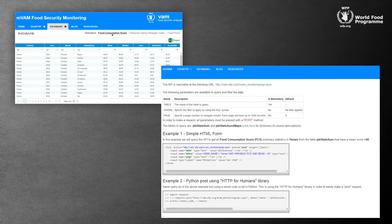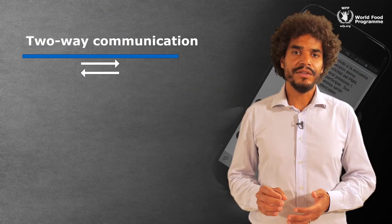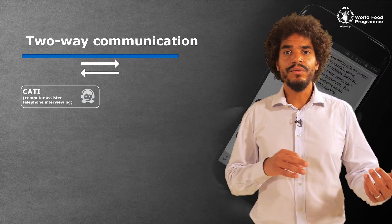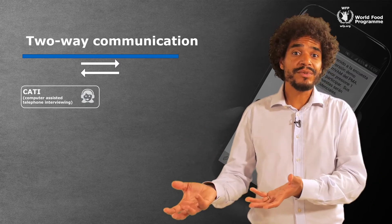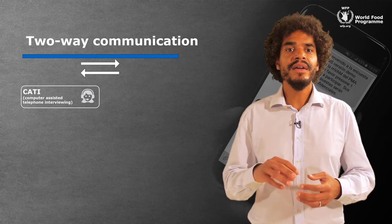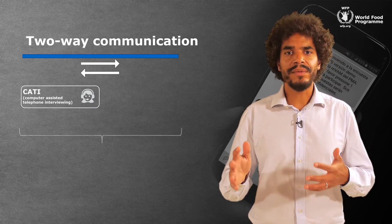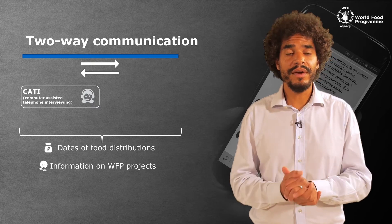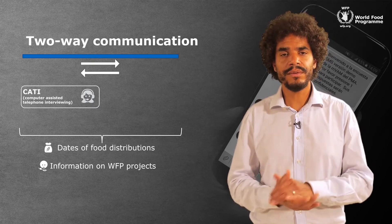In addition to just collecting data from our beneficiaries and surrounding communities, we also want to give people the information that we collect. To that end, we've been experimenting with two-way communication. In Somalia, for example, the operators who place outgoing calls also take incoming calls from beneficiaries all over the country. The respondents and the people who call in sometimes have questions about the next WFP food distribution, or they want more information about projects in their area, and their operators answer those questions.